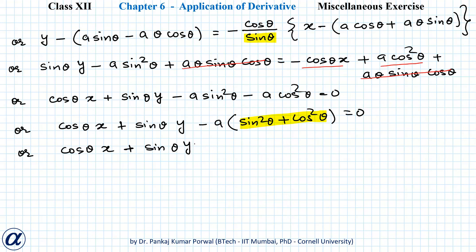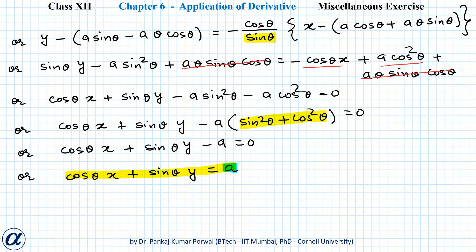So we get cosθ · x + sinθ · y = a. If you remember, this is the normal form of the equation of a line, where a is the distance of the line from the origin and θ is the angle made by the normal with the positive x-axis. So this line is always at constant distance a from the origin.